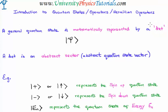If you want to write a ket or represent it mathematically, we're going to use this nomenclature here. We'll refer to this as the ket psi, because of course this is the Greek letter psi. Now a ket is an abstract quantum state vector, or an abstract state vector, or an abstract quantum vector.